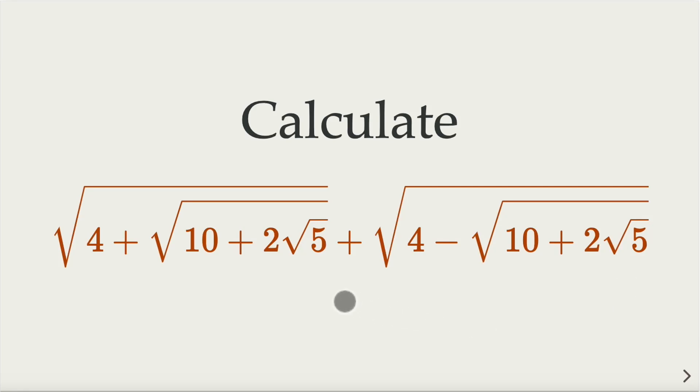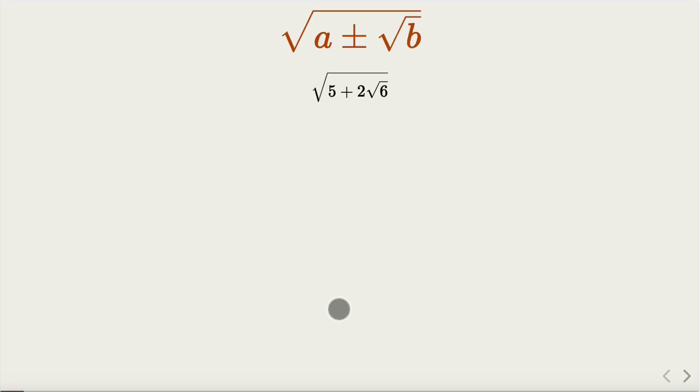How do you calculate this complex expression involving radicals? Let's think about it. Alright, let's look at the answer. For the form of a plus or minus square root of b, there is a common trick: complete the square.